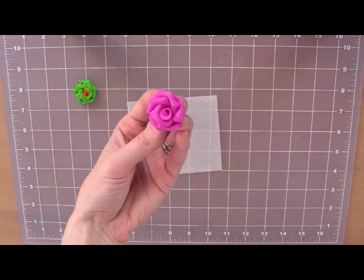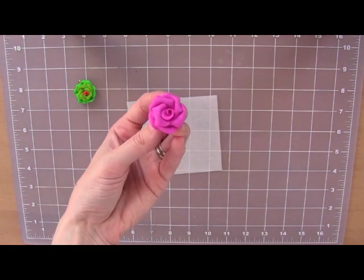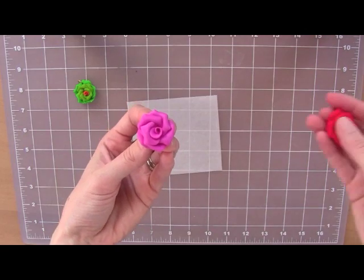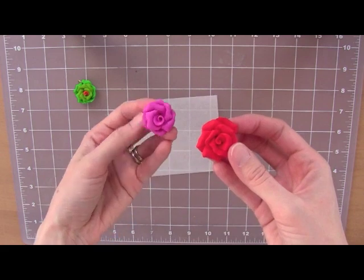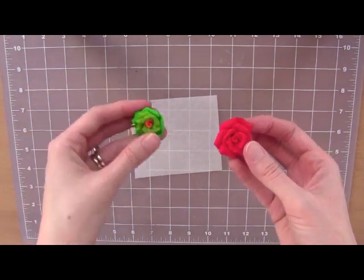These roses can be used for lots of different things. If you decorate cakes or cupcakes, you can also use these techniques to create the same roses out of gum paste or fondant quickly and easily. Beautiful!